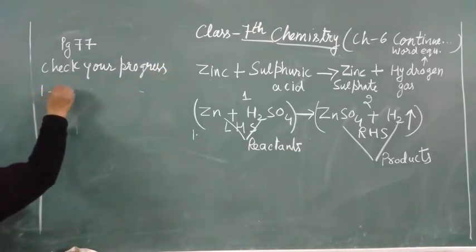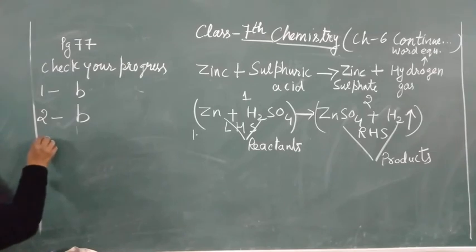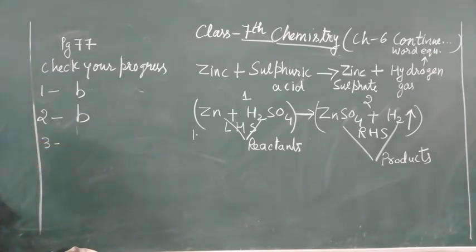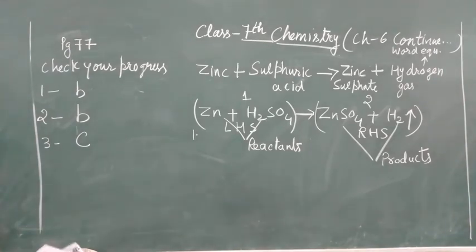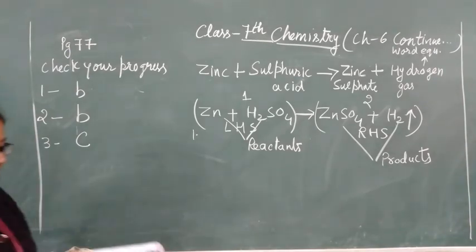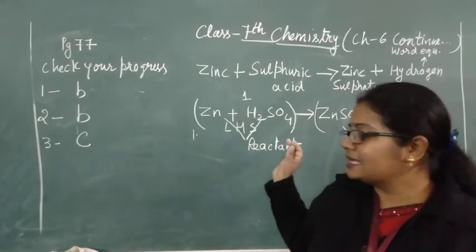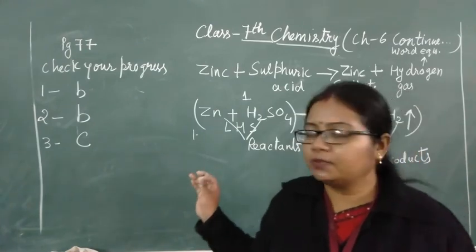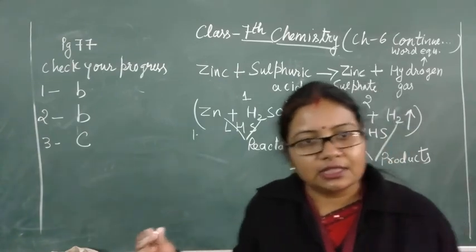Now check your progress on page number 77. A chemical equation is a representation of a chemical change in terms of symbols and formulas of the reactants and the products. I hope all of you understood chapter 6. I have completed chapter 6. In my next video I will give the question and answer of chapter 6. Thank you so much.